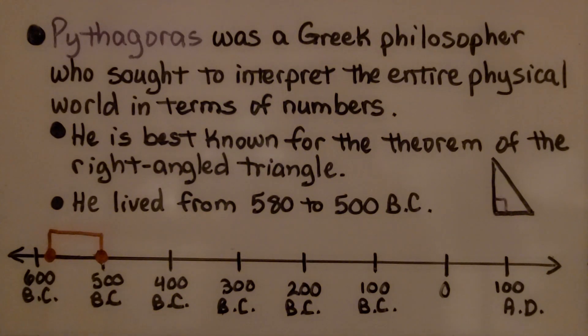He lived from 580 to 500 BC. Here's 0, BC is before Christ, AD is after his death. So we're going to go back 100 years before Christ, 200, 300, 400, 500. So he lived from 580 to 500 BC.